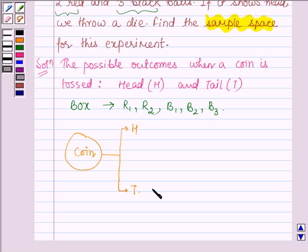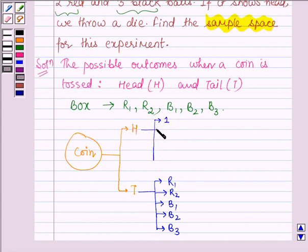So, the possible outcomes are R1, R2, B1, B2 and B3. And, if it shows head, we throw a die. So, the possible outcomes of a die as we know are 1, 2, 3, 4, 5 and 6.